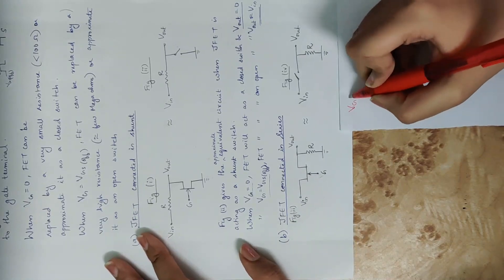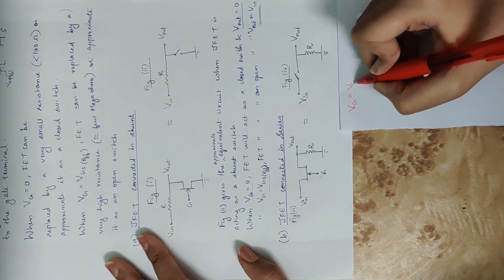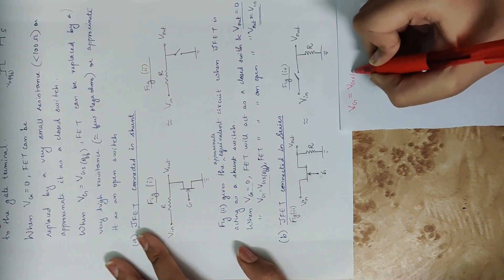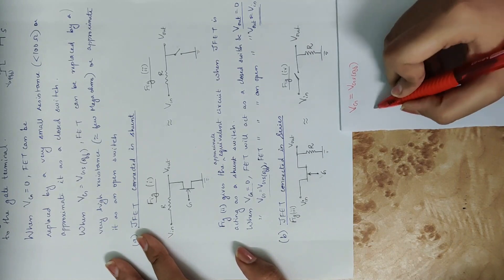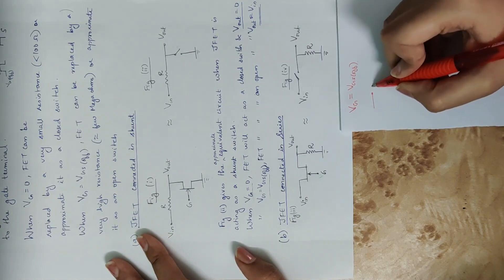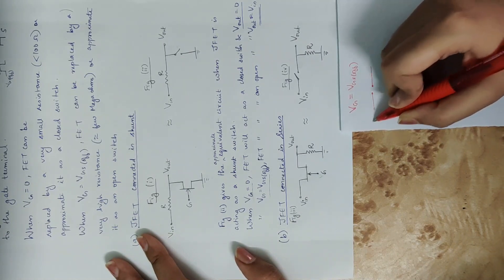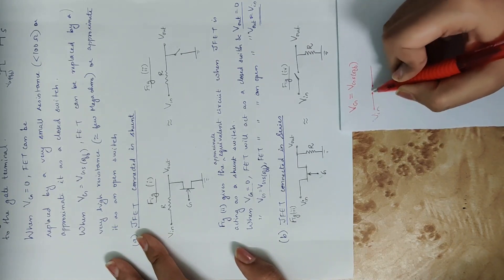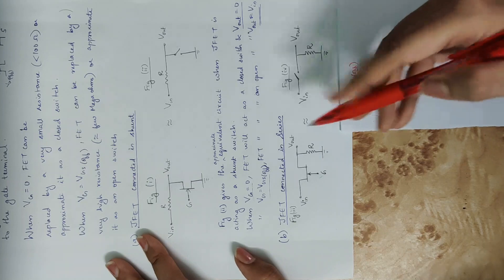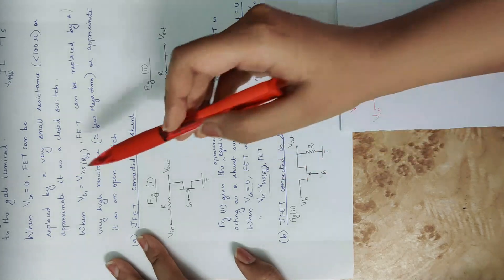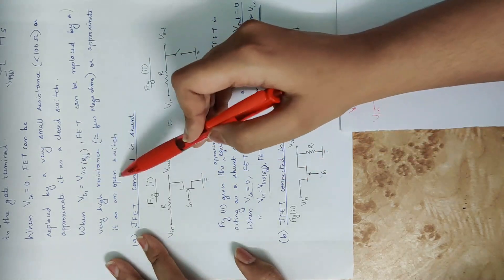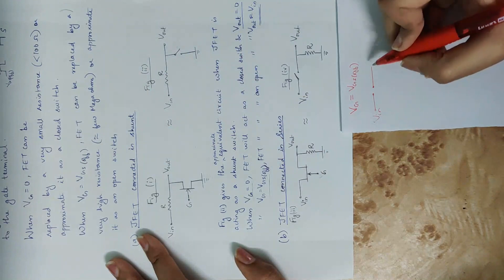Suppose the gate voltage is VGS off. When VGS off is applied, the switch acts as an open switch.